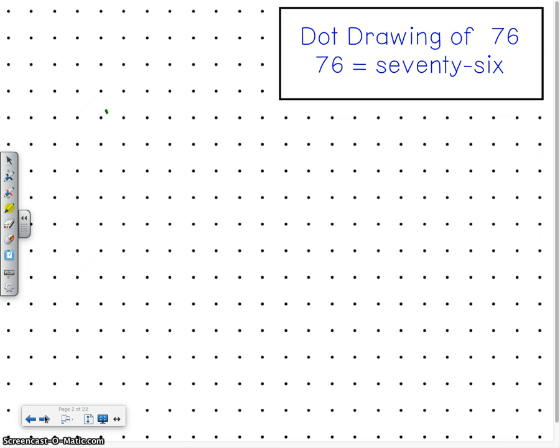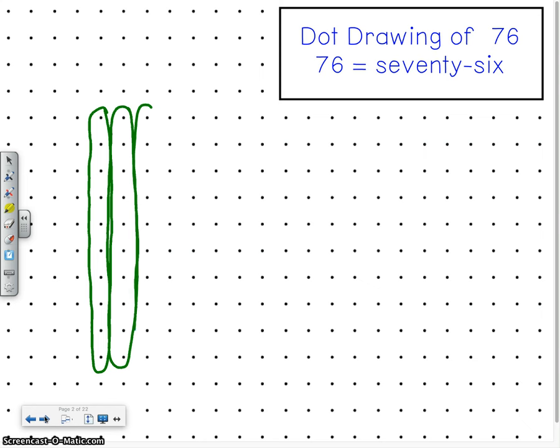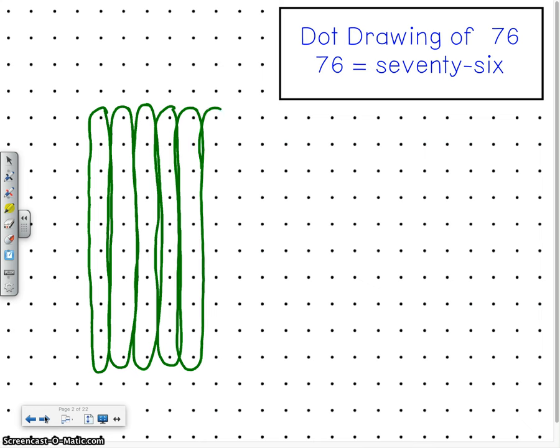All right, let's try that. So I'm just gonna make a big bar around those dots. So I have 10, 20, 30, 40, 50, 60, 70. If you do another group of 10 we're gonna be at 80 and you're only supposed to draw 76, so maybe you should just circle now one at a time until we get to 76. That's a great idea.